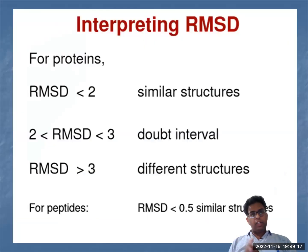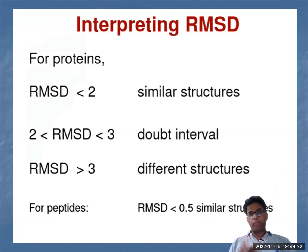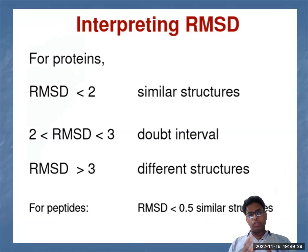For interpreting RMSD in proteins: if it is less than 2, there is a possibility of similar structure; if zero, both are the same protein. If it is more than 2 and less than 3, there is doubt; more than 3 means a different structure. For peptides, because they are small structures, 0.5 or less than 0.5 is the important RMSD threshold.